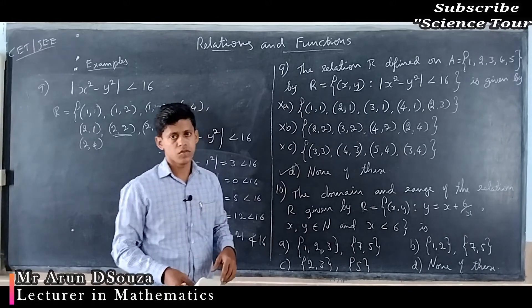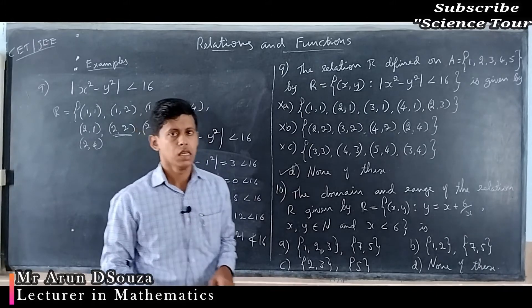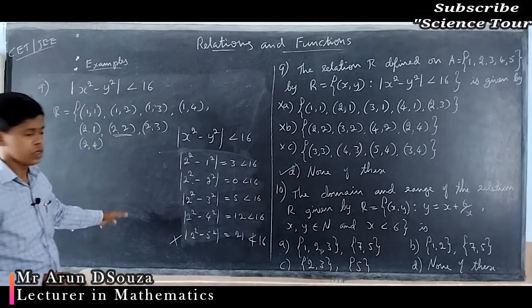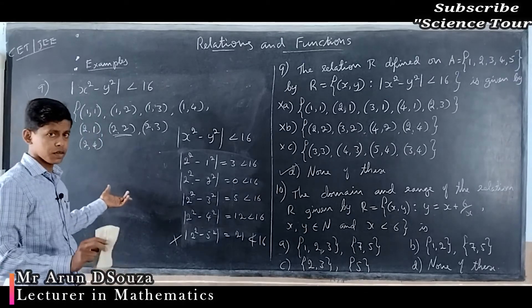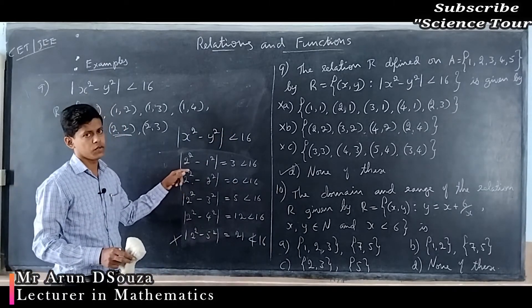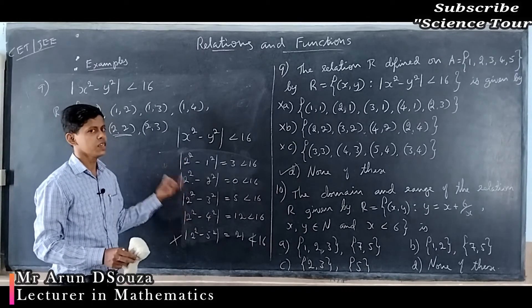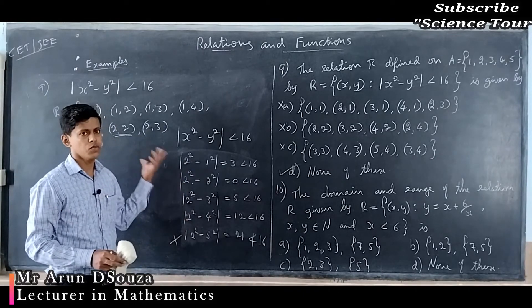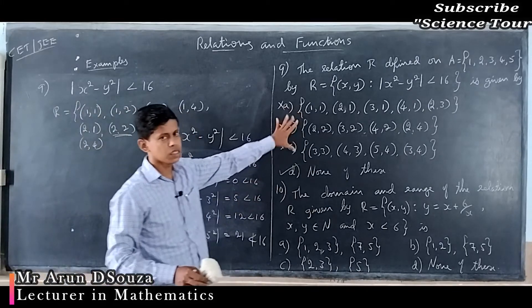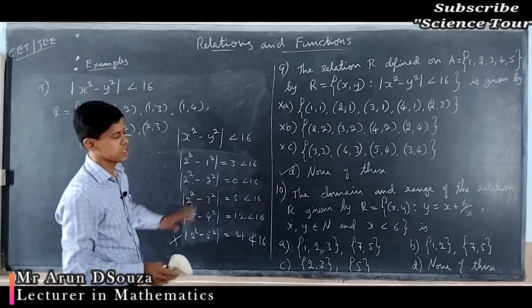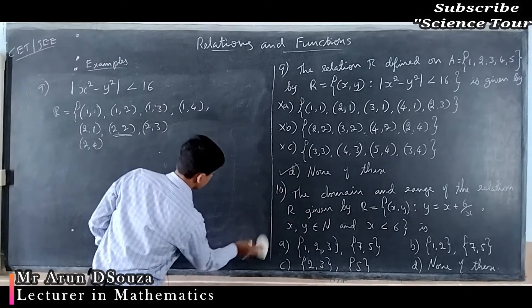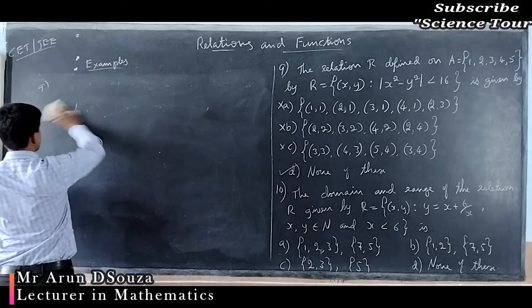Therefore, the answer is the fourth option: none of these. You can continue writing all ordered pairs — it is not infinite since x and y only go up to 5 — but with the pairs already identified, we can confirm that the first three options are all incorrect. Moving on to question 10.